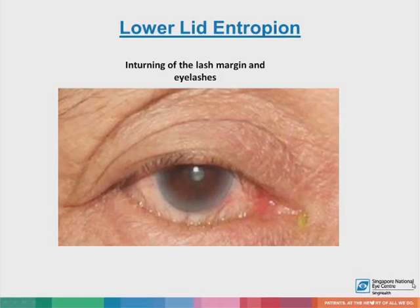So what is lower lid entropion? It's the inturning of the lash margin and the eyelashes, as seen in this photograph. You can actually see the lashes that are plastered against the eyeball and the globe, with the inturning of the lash margin that's barely visible in this photograph.